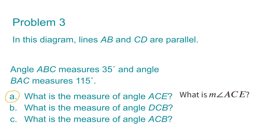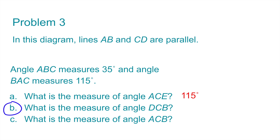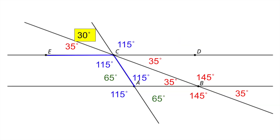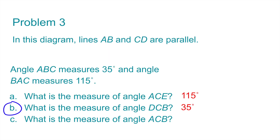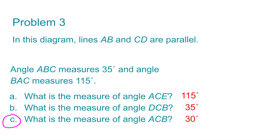Part A asks for the measure of angle ACE. Looking at the diagram, angle ACE is 115 degrees. Part B asks for the measure of angle DCB. Looking at points D, C, and B, the measure of angle DCB is 35 degrees. Part C asks for the measure of angle ACB. Looking at points A, C, and B, the corresponding measure is 30 degrees, so the measure of angle ACB is 30 degrees.